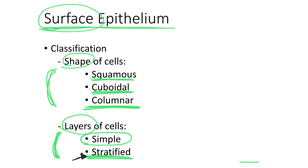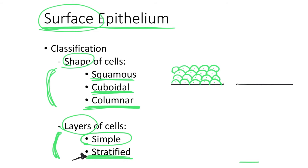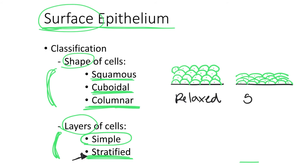There is another surface epithelium where we see the basement membrane, then the basal layer of cells, and another layer on top. When relaxed, these cells appear rounded. But in a different instance, looking at this same tissue, we see several layers of cells that are stretched rather than rounded. It is the same epithelium, and it has the ability of being relaxed or stretched, transitioning from one state to the other. That is why this epithelium is named transitional epithelium.